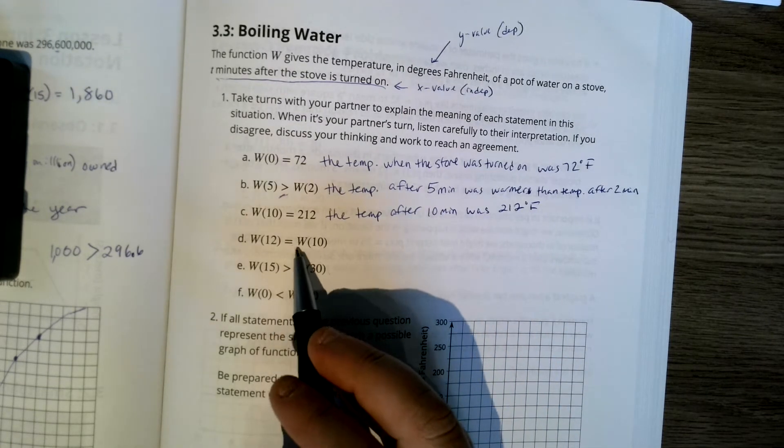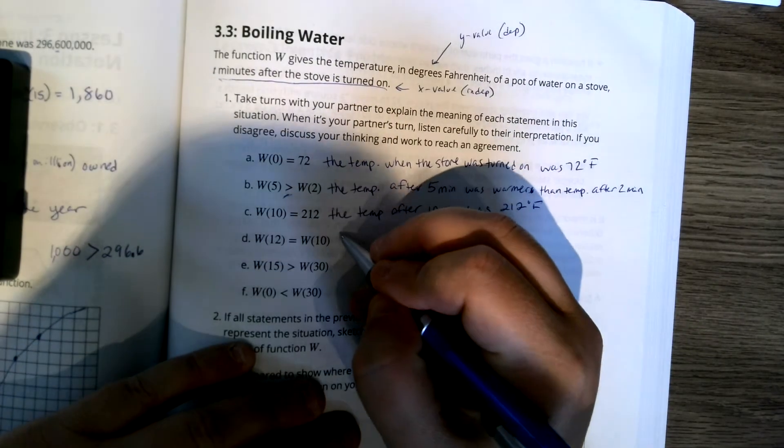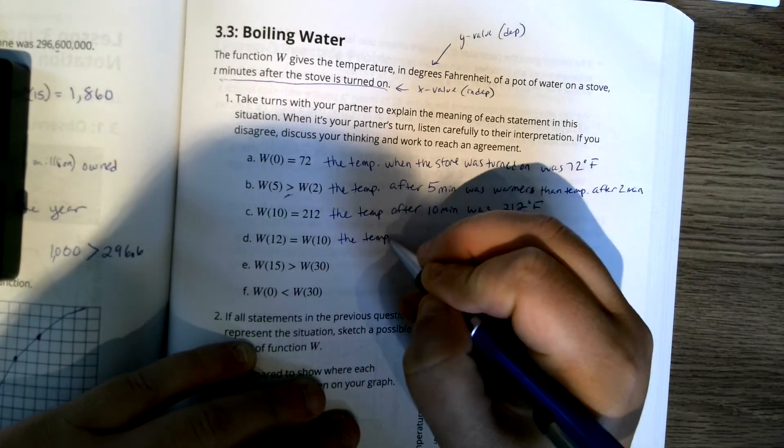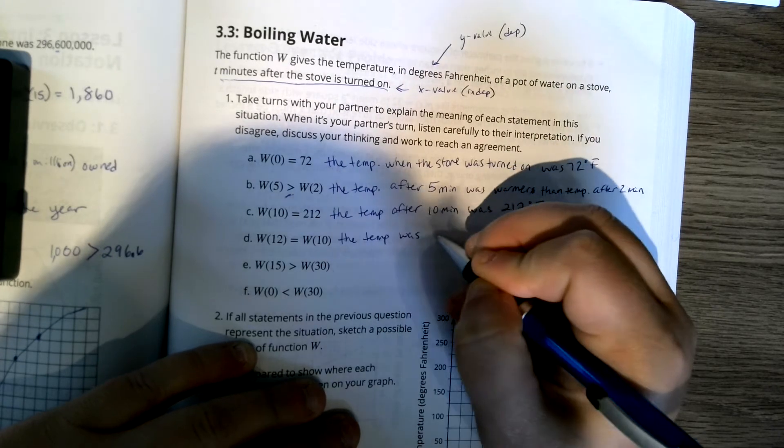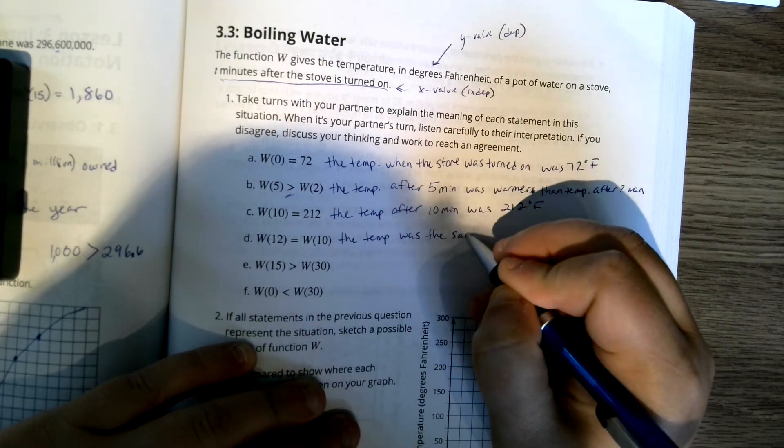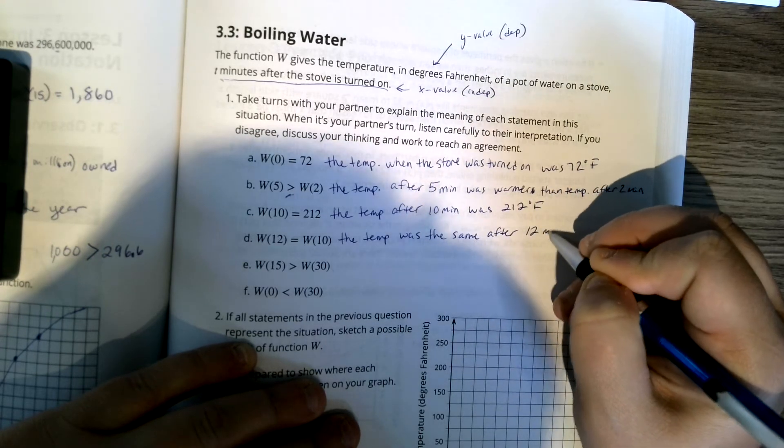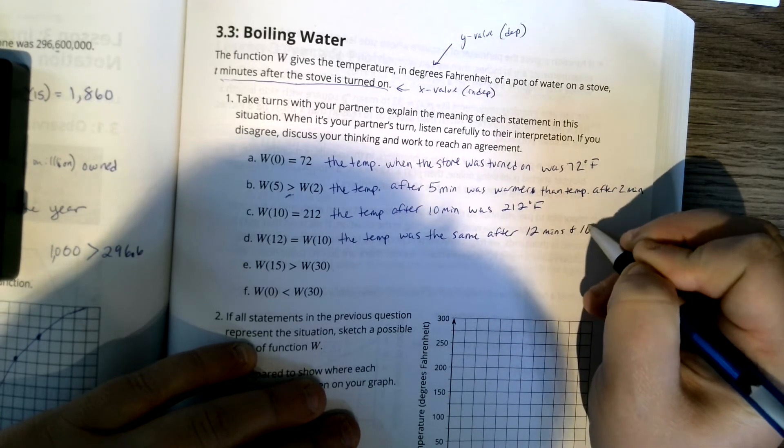W of 12 equals W of 10. That means the temperature was the same because equal means the same after 12 minutes and 10 minutes.